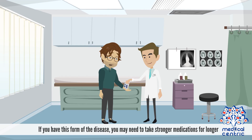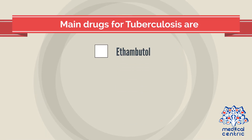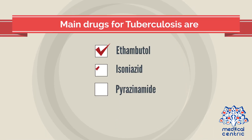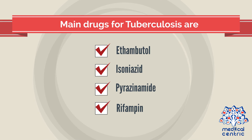If you have drug-resistant TB, you may need to take stronger medications for longer. The main drugs for tuberculosis are ethambutol, isoniazid, pyrazinamide, and rifampin.